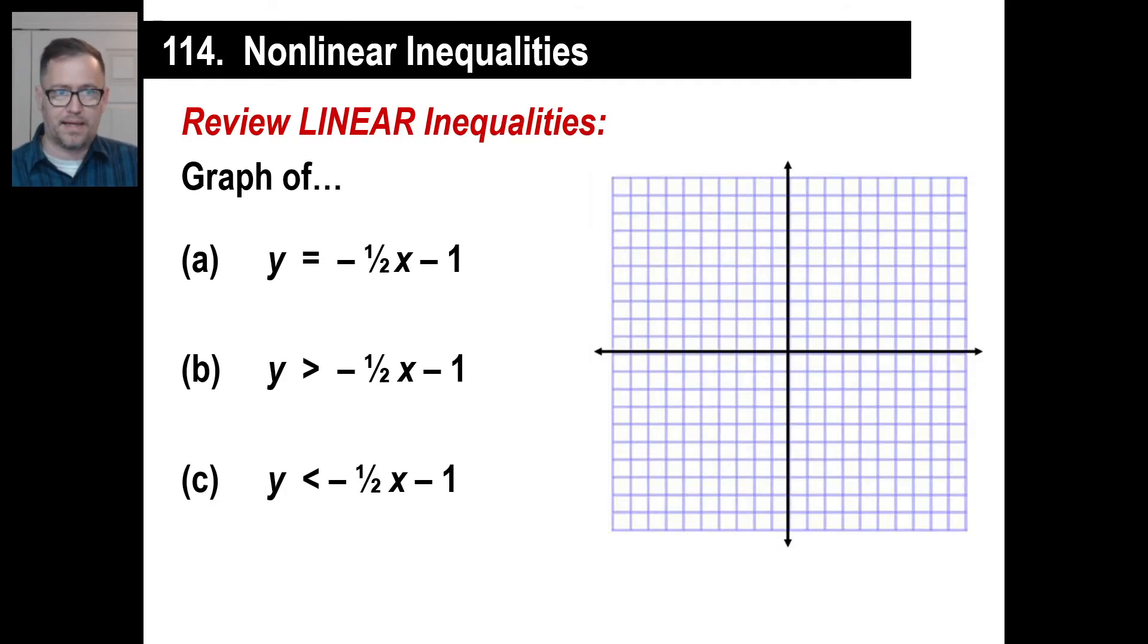Let's go back and look at linear inequalities first. Look at a, b, and c, and let's just draw this. You should be able to look at this and draw that line. The y-intercept is negative one, the slope is negative a half, which means it points down. I need to go one down, two over, one down, two over, and so on. That's the line.